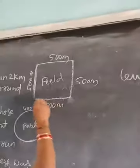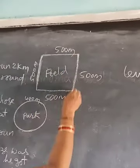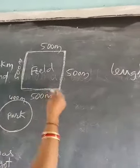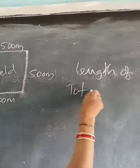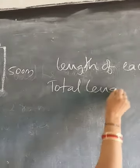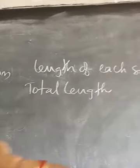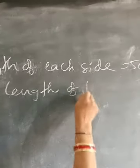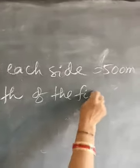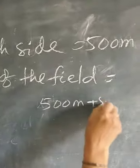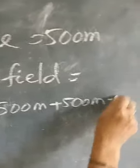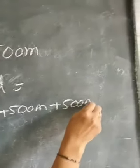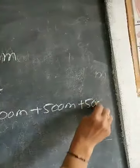Each side is 500 meters. Then, you have to find the total length of the field. Total length means you have to add all the sides. Total length of the field equals: